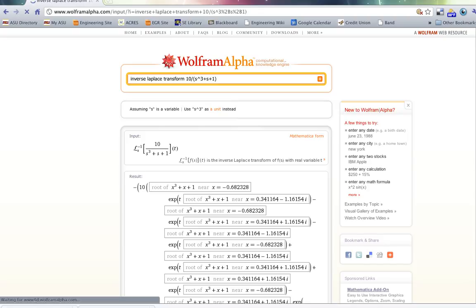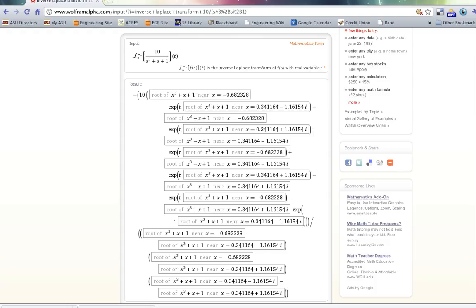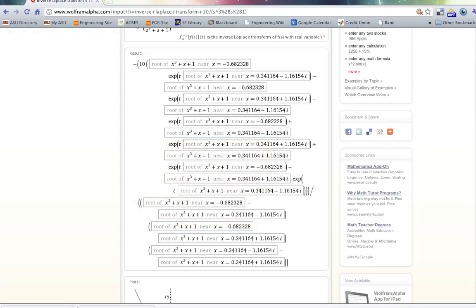And you can see that I get a result that is minus 10 times the root of x cubed plus x plus 1 near x is equal to minus 0.682328 and that's actually kind of not that useful.